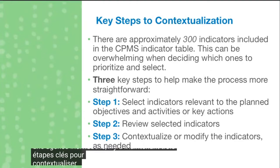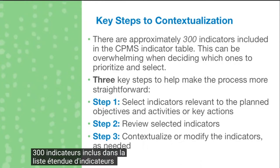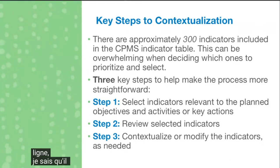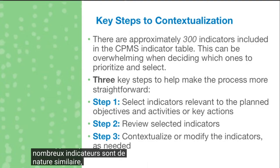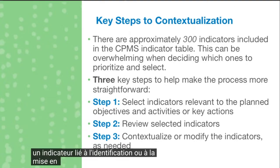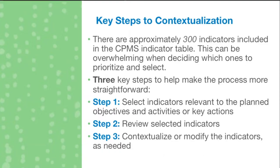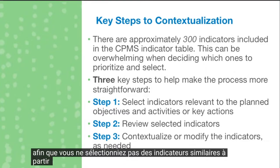There are approximately 300 indicators included in the extended list of indicators available online. I know this can be overwhelming when deciding which indicators to prioritize and select. However, many of the indicators are similar in nature — for instance, many standards include an indicator related to identifying or putting into place a functional referral mechanism, or one related to satisfaction with service provision. I would encourage you to modify them accordingly so you're not selecting similar indicators from your priority standards.